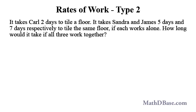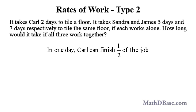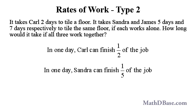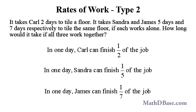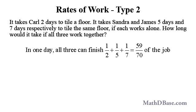It takes Carl two days to tile a floor. It takes Sandra and James five days and seven days, respectively, to tile the same floor if each works alone. How long would it take if all three worked together? In one day, Carl can finish one-half of the job, Sandra can finish one-fifth of the job, and James can finish one-seventh of the job. Working together, all three can finish one-half plus one-fifth plus one-seventh, or 59-seventieths of the job, in one day.